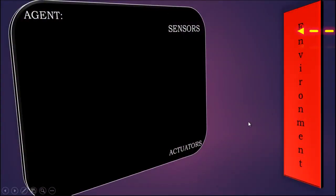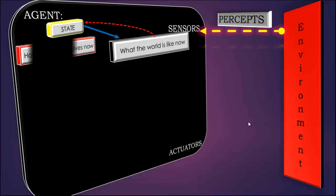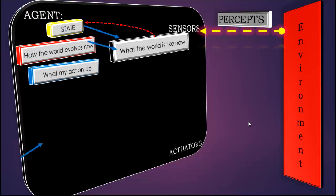The agent will take inputs in terms of percepts from its environment through its sensors. Next, on the basis of percepts it asks how the world is like now. And from its internal state it matches how the world evolves and what kind of actions it has to take.